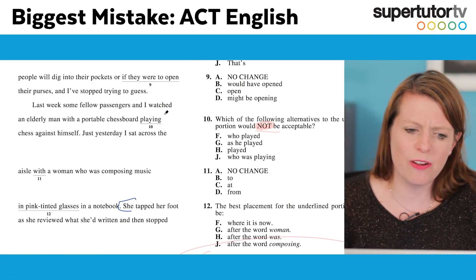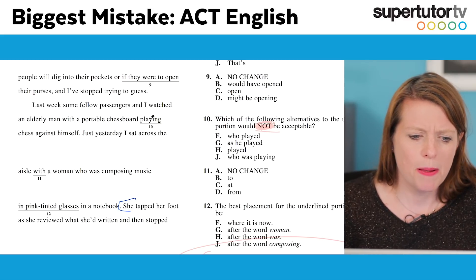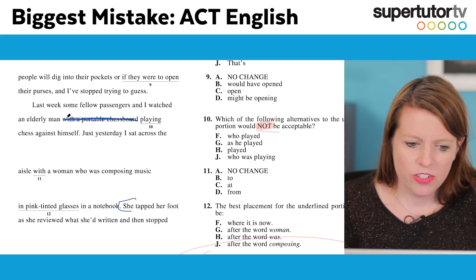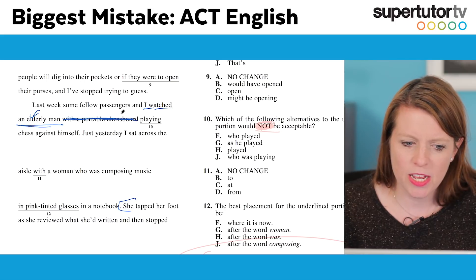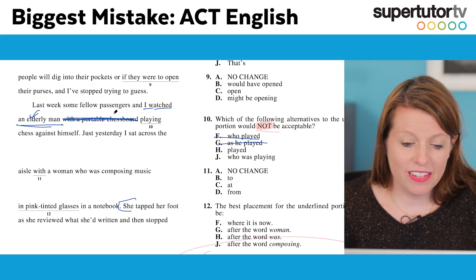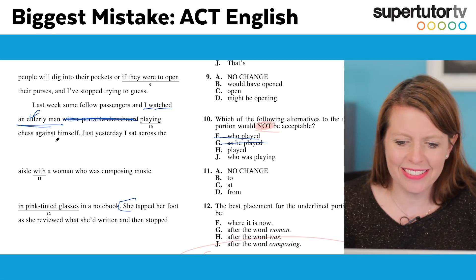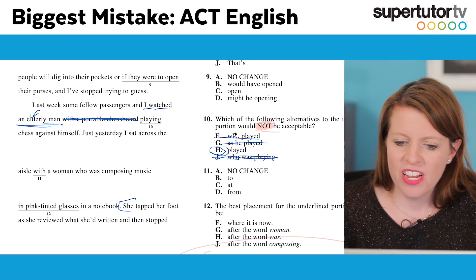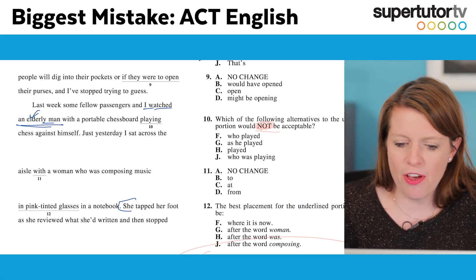Let's look at this quickly. Number 10: 'Last week, some fellow passengers and I watched as an elderly man with a portable chess board [blank] chess against himself.' What I might do is eliminate the interstitial phrase so I can get subject and verb close together: 'I watched an elderly man playing chess against himself' — that makes perfect sense. 'As he played' works too. But 'played' does not work — 'I watched an elderly man played chess' is super awkward. Answer H makes an object a subject, which is really awkward. So I know H is wrong. But here's the catch: had you not read the 'not' and thought 'F seems to sound pretty good,' you probably would have just picked F and moved on and gotten this totally wrong. So don't be that person.